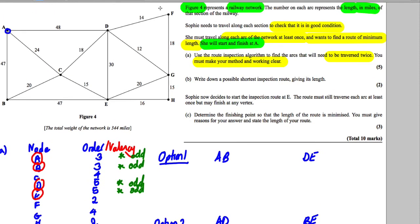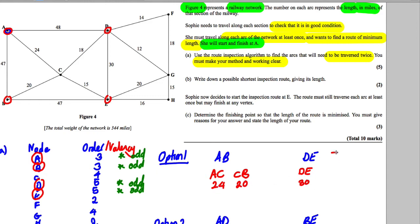These pairings represent the shortest paths, not necessarily direct arcs. For Option 1 — A to B: going via C gives 24 + 20 = 44, which is better than the direct 47. D to E: going directly gives 30, which is shorter than 12 + 20 = 32 or 18 + 15 = 33. So Option 1 total extra = 44 + 30 = 74.